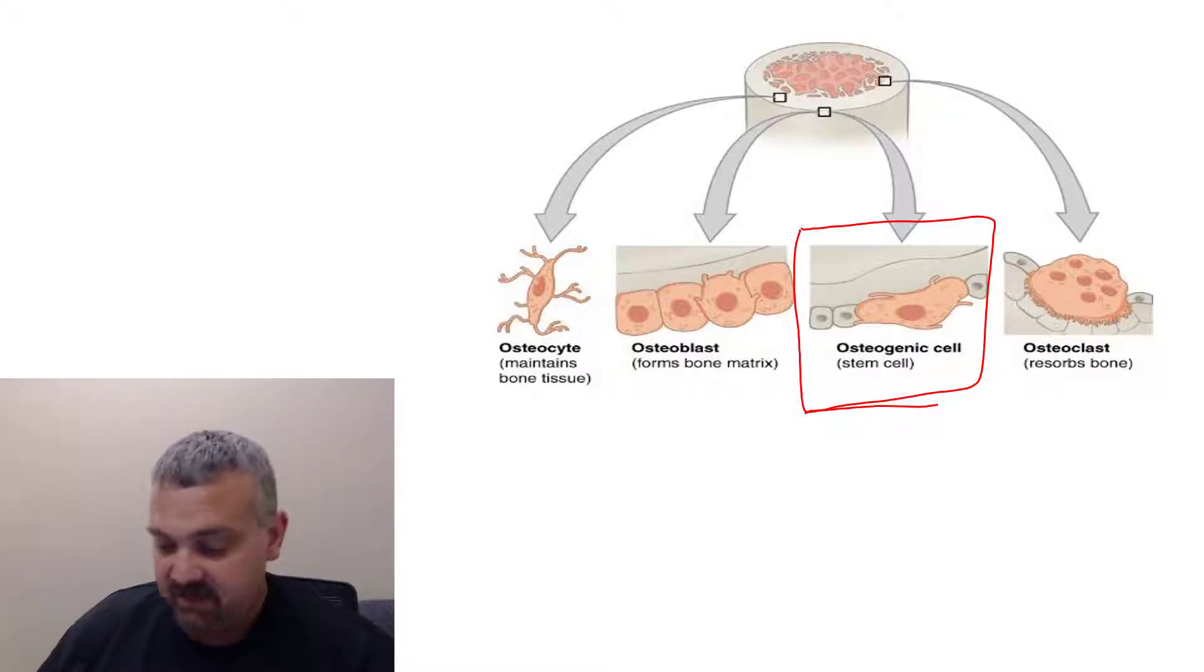When you need new bone, the osteogenic cell or the osteoprogenitor cell is going to kick into gear. What actually happens is the osteogenic cell will become an osteoblast.